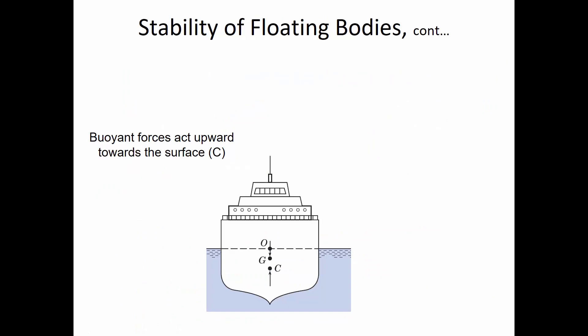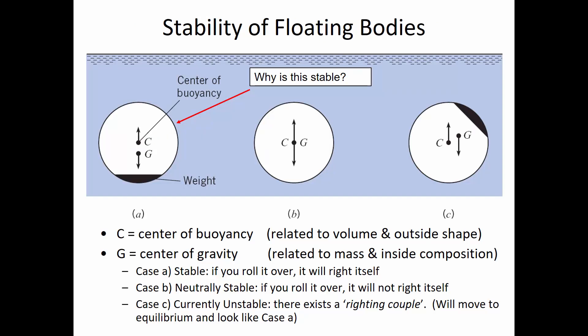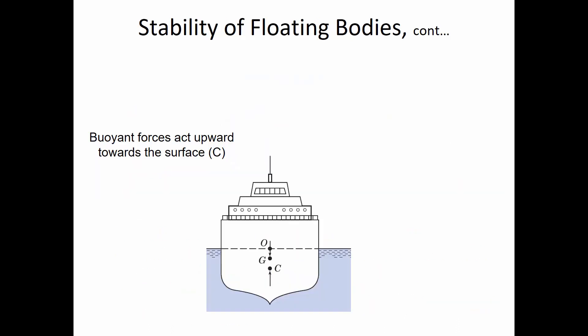When G is above C, what happens is G continues to go down until it's below the center of buoyancy. This is called a righting couple — it's going to right the object back into equilibrium. A 'couple' means: think of pushing up at C and down at G — that twists the object back. There are also situations where the center of gravity can be above the center of buoyancy and it will still be stable. Buoyant forces go up and gravitational forces go down.